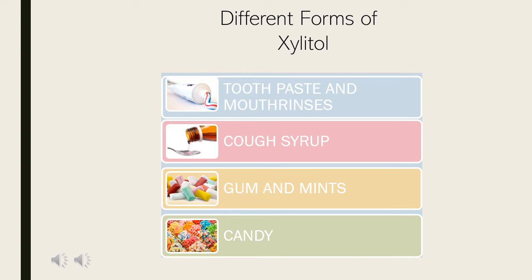What products can xylitol be found in? The dental industry leads the way in using this product. Most commonly, you can find it in toothpastes, mouth rinses, on floss, and in chewing gum or mints. With an increased awareness of daily sugar intake, consumers are looking for other sugar alternatives. You can find xylitol in its crystalline format to be used in baking or for your morning coffee. Candies are being made with xylitol instead of sucrose to appeal to children, as well as in cough syrups and lozenges.